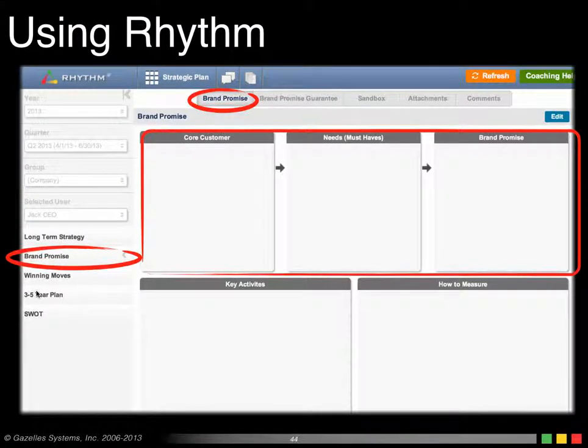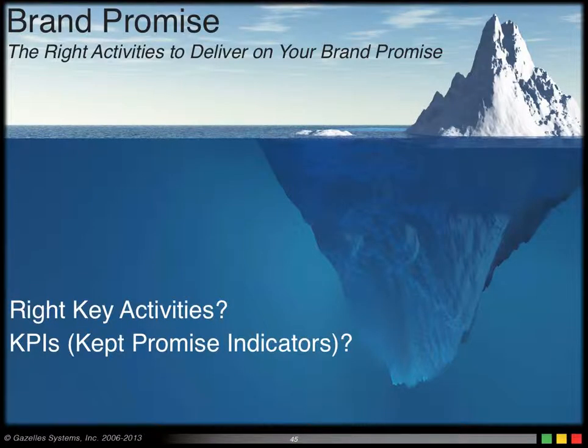Now after you've worked on the brand promise, you want to think of the right activities to deliver on your brand promise. The brand promise is not only about marketing, it's also about being able to deliver what you're promising. What are the right key activities for you to think about, and how do you keep those promises? How do you measure that? I like to think of that as your KPIs, in this case, as your kept promise indicators.